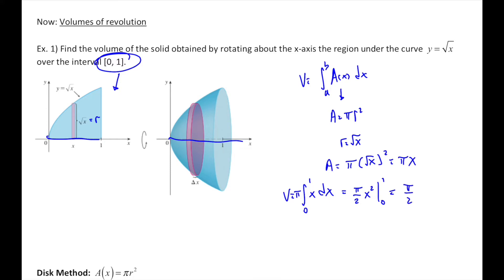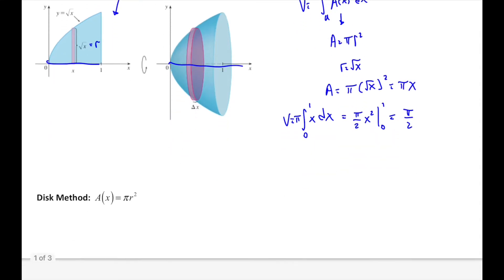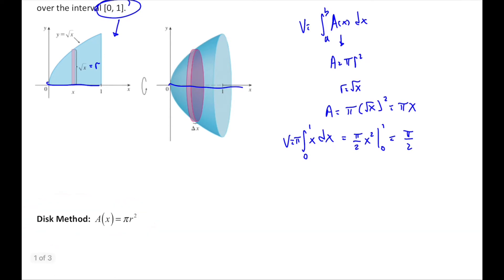The big idea here is when we rotate, thinking back to our rectangular notion for area under a curve, we spin that rectangle around and it gives us a circular disk. We call this the disk method for finding the volume of a revolution. The volume is π times the integral from a to b of the radius squared dx, where R is the radius relative to the axis of revolution.